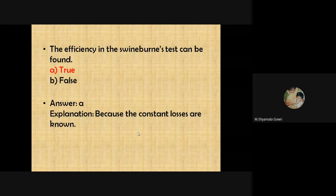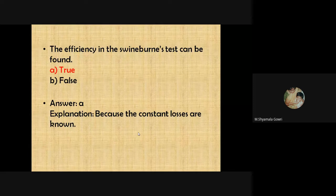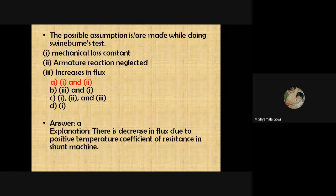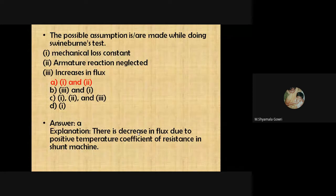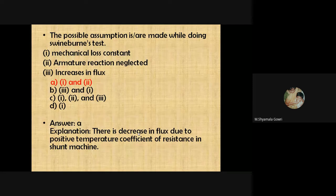The efficiency from a Swinburne test can be found because the constant losses are known. The assumptions made while performing the Swinburne test are: first, mechanical loss is constant; second, armature reaction is neglected. The third assumption — increase in flux — is not valid, as there is actually a decrease in flux due to the positive temperature coefficient of resistance in a shunt machine. So the correct assumptions are the first and second.